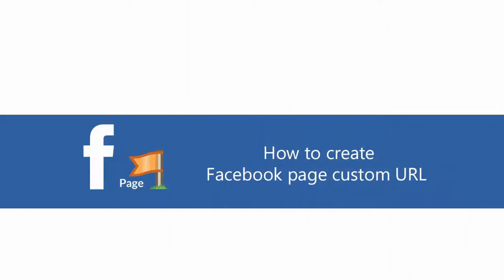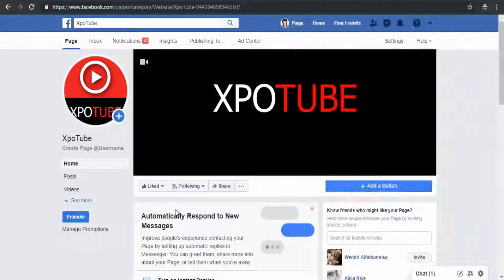In this video we will see how to create a custom URL for a Facebook page. You can create a custom URL for your Facebook page only if you are eligible, which depends on how many people have liked your page. The minimum likes needed is 25 as of this video.